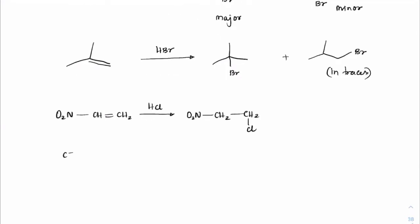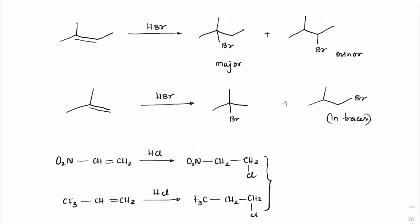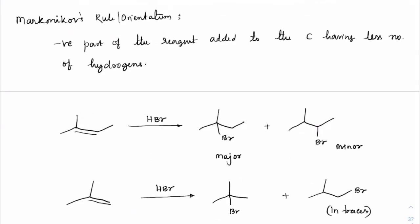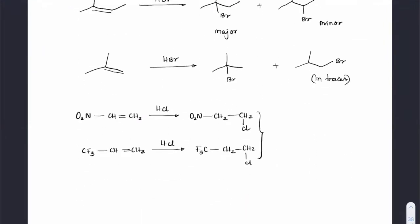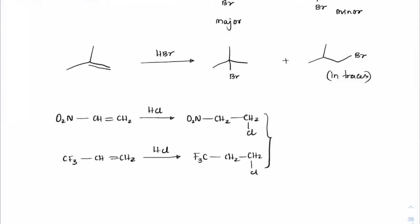When addition happens opposite to Markovnikov's rule — negative group adding to the carbon with more hydrogens — this is called anti-Markovnikov addition. With O₂N–CH=CH₂ and HBr: the more stable carbocation is O₂N–CH₂–CH₂⁺ (primary, but away from the withdrawing group) rather than O₂N–CH⁺–CH₃ (secondary but destabilized by the withdrawing nitro group).